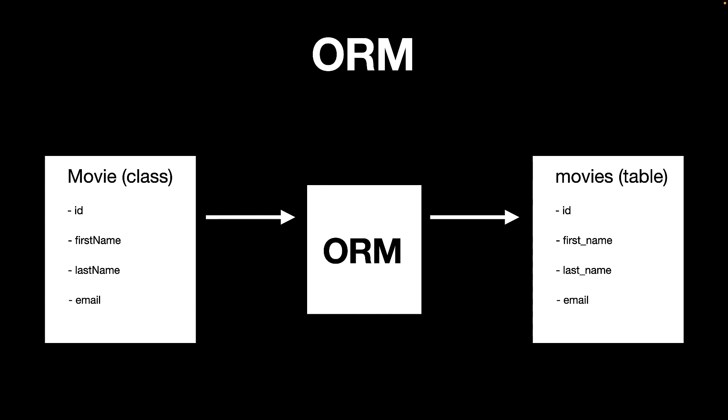This means the movie class can have functions like save, to save a movie; delete, to delete a movie; find all, to find all the movies; and many other operations. So instead of writing SQL by hand, you use an ORM which will generate and execute SQL on your behalf. That is what is known as an ORM, and we will be using Fluent ORM for our example.